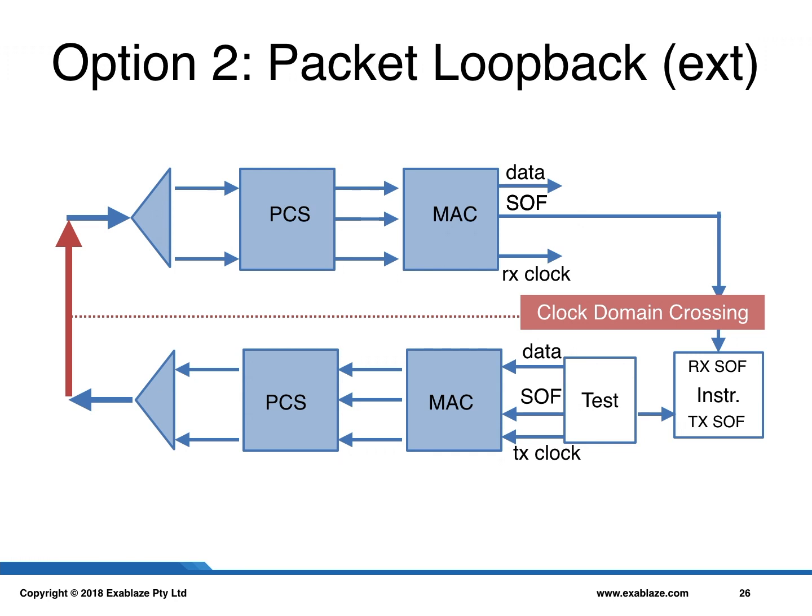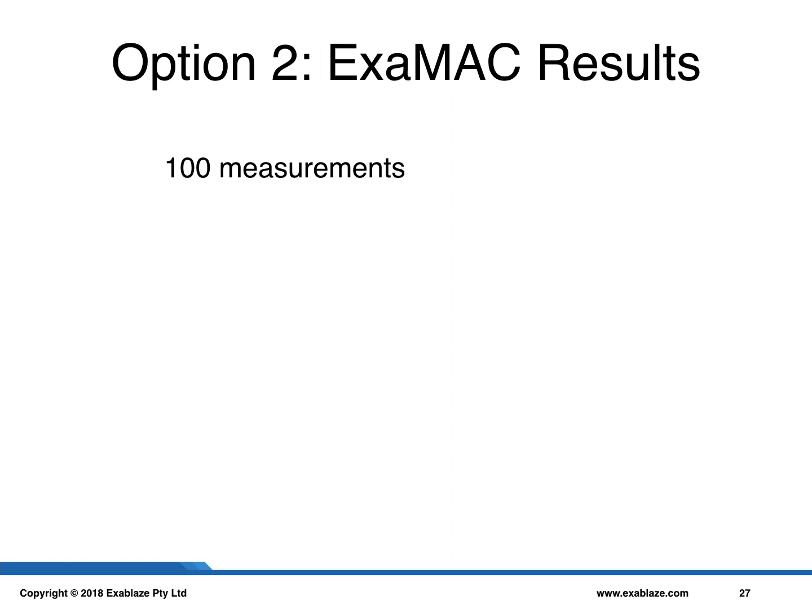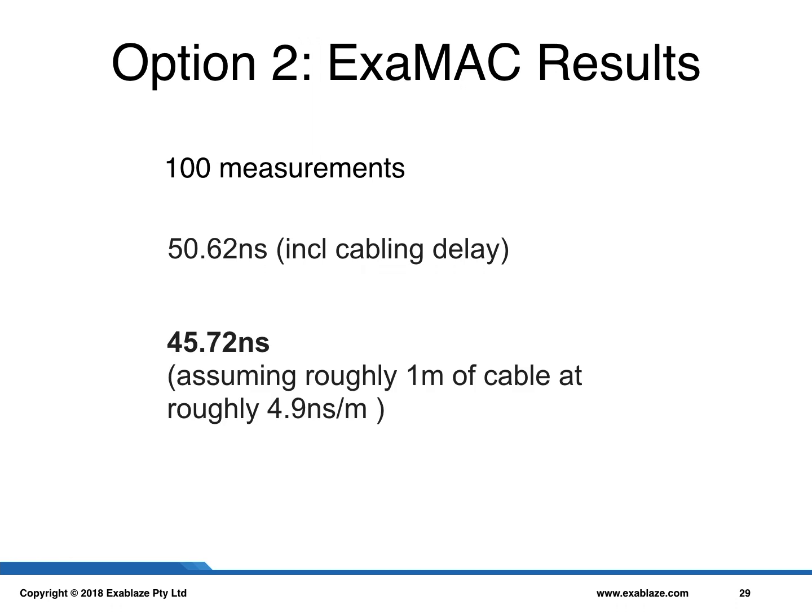We have done this measurement on our own ExaMac, taking 100 measurements, and found a delay of 50.62 nanoseconds including cabling delay. Cabling delay can be very difficult to estimate accurately — if you are interested in this topic, I encourage you to look at my previous videos on nanosecond-scale network measurement. Assuming roughly 1 meter of cable at roughly 4.9 nanoseconds per meter, our final measurement becomes an average of 45.72 nanoseconds.